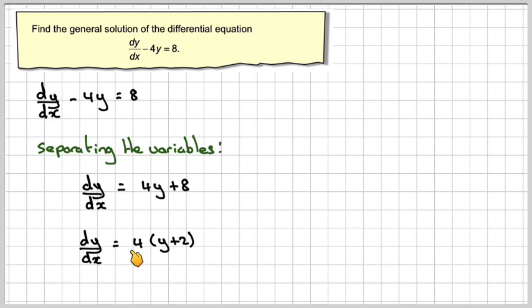So we've got dy by dx is equal to 4 times y plus 2, and now we can actually separate the variables by writing on the right-hand side 1 over y plus 2, because it's 4 times here. dy by dx is equal to 4.